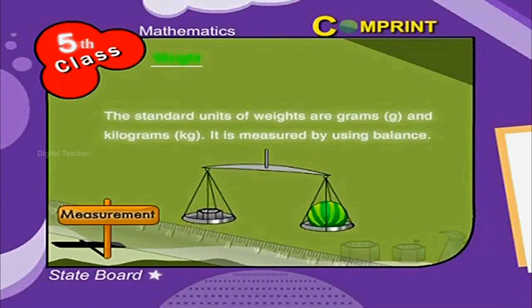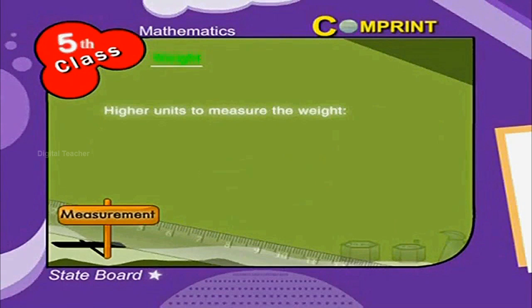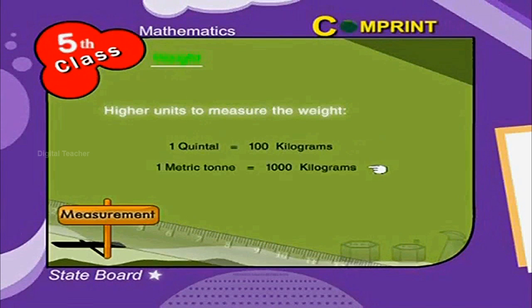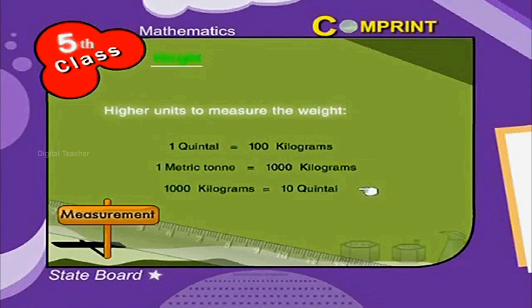Higher units to measure weight: one quintal is equal to one hundred kilograms. One metric ton is equal to one thousand kilograms, that is ten quintals.